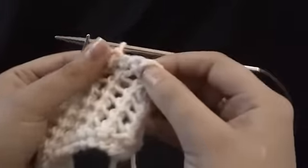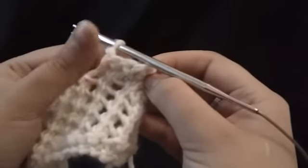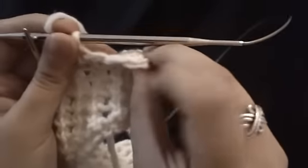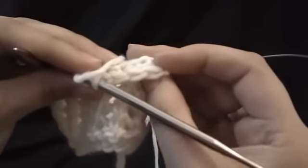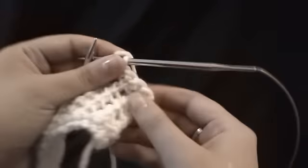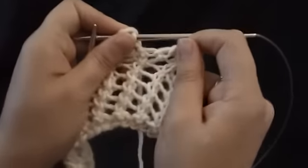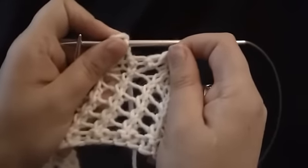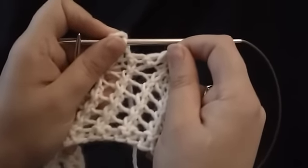But you can see it gives a nice kind of purl bumpy edge, as well as that chain structure that you want from a bind off or that you would get from a traditional bind off. But it's much stretchier. So it doesn't impede the blocking of the openwork fabric.